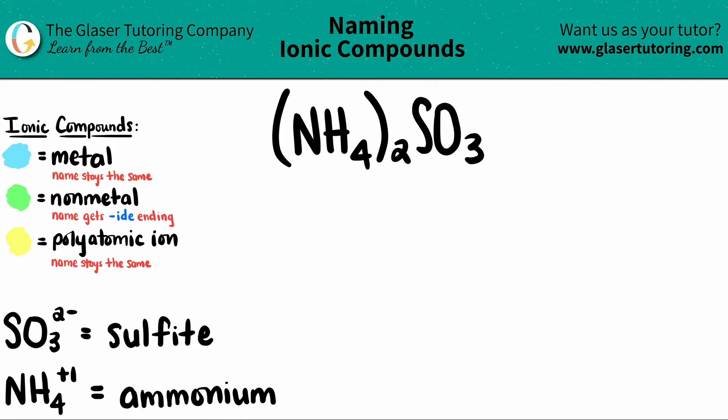In this case, we have four different elements. We have N for nitrogen, H for hydrogen, S for sulfur, and O for oxygen.